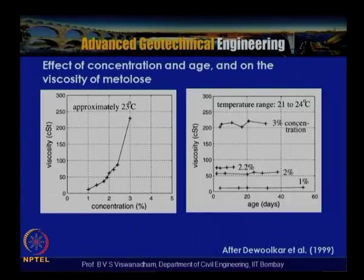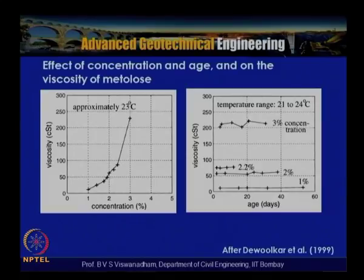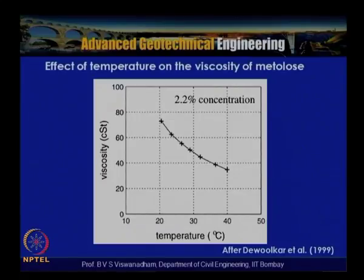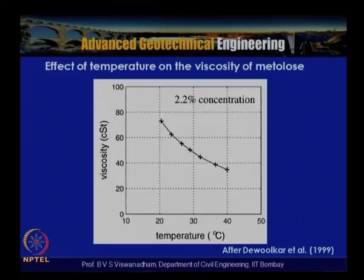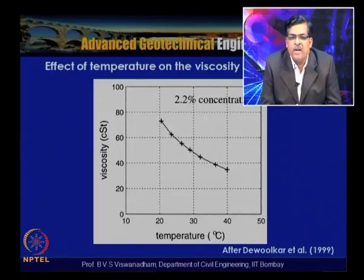In beam centrifuges, cooling systems and ventilation maintain ambient temperatures during testing, so viscosity remains stable. However, the effect of temperature on Metallose viscosity shows that with increasing temperature there is a decrease in viscosity — for 2.2% concentration, a temperature rise to 40°C results in a fall of about 30–40%. This is not a concern when suitable ventilation maintains ambient temperatures in beam centrifuge equipment.